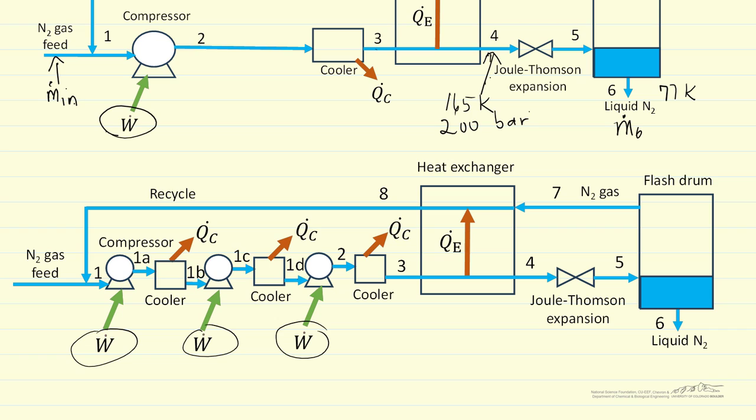So this is the Linde cycle, sometimes called the Linde-Hampson cycle. And what we'll do in subsequent screencast is show this process on a pressure-entropy diagram and a temperature-entropy diagram. And then we'll do the calculations for what fraction of the circulating material, what fraction of the gas that's fed into the Joule-Thompson expansion is converted to liquid, and how much work does it actually require to create a kilogram of liquid.